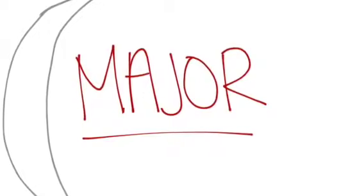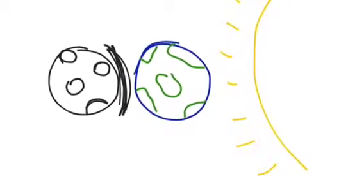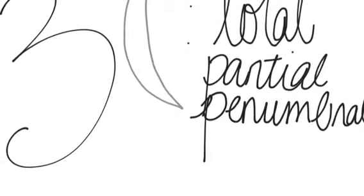The lunar eclipse is another major eclipse. It occurs when the Earth travels between the moon and the sun, casting a shadow on the moon. There are three types of lunar eclipses: the total, the partial, and the penumbral.